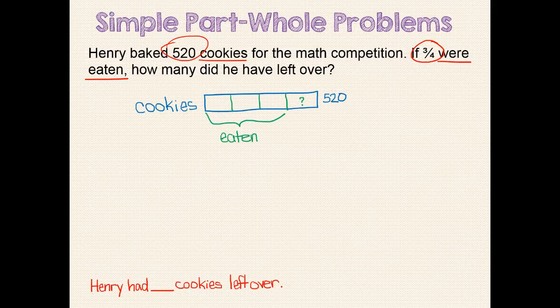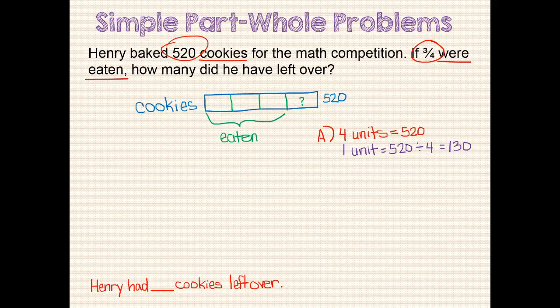The bar is subdivided into 4 pieces because we are told that 3 fourths of the cookies were eaten. We can put our question mark in the last piece because it represents the cookies which are left over. Looking at our model, if 4 units equals 520, then 1 unit equals 520 divided by 4, which is 130. So each of these pieces is 130 cookies. Henry had 130 cookies left over.